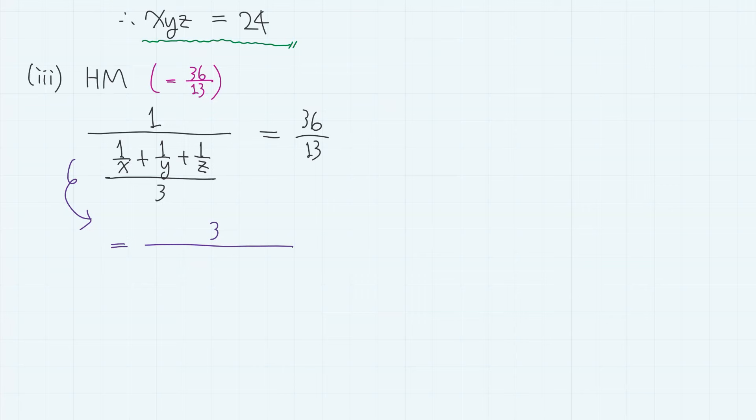If we take a look at the left-hand side, it can be simplified. 3 goes up here, and this part becomes xy plus yz plus zx divided by xyz. So, we have 3xyz divided by xy plus yz plus zx equals 36 over 13.